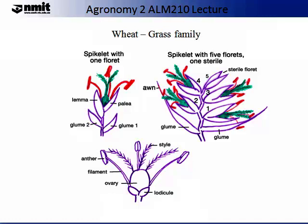The first species that we are going to examine in this lecture is wheat. Wheat is a member of the grass family. On the image in front of you, there are three pictures of different components of inflorescences with common features across the grass family. Please notice some of the terminology, such as the spikelet with one floret and where the lemma and palea is. Also note that when the spikelet is more advanced, it has five florets on one sterile, which you can see counted and displayed on the image.